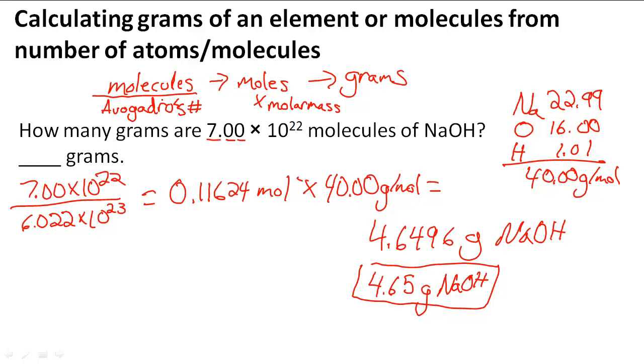First we had to go from molecules to moles and we did that by dividing by Avogadro's number. Then we went from moles to grams and we did that by multiplying by molar mass.